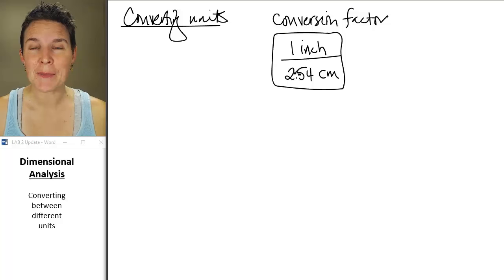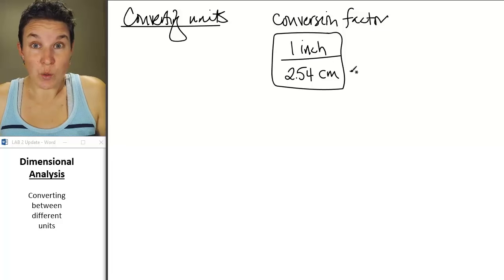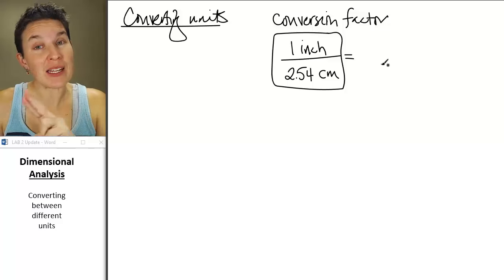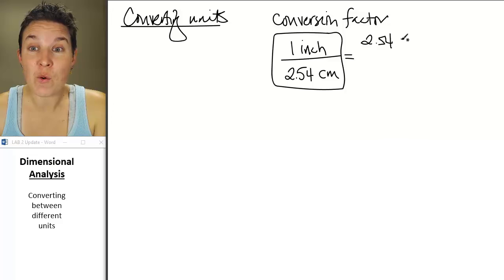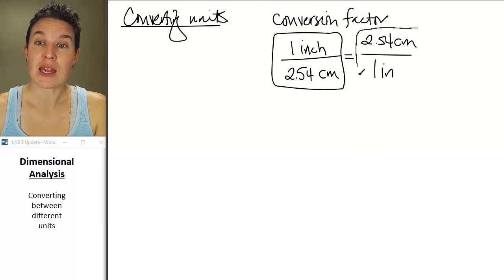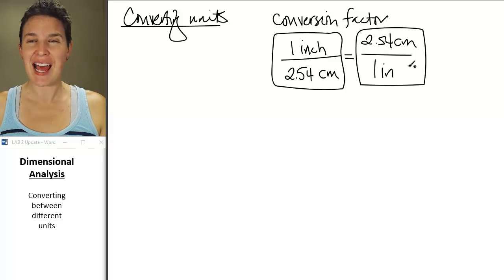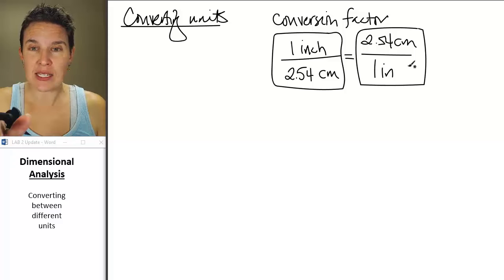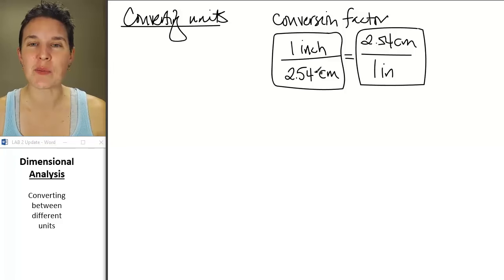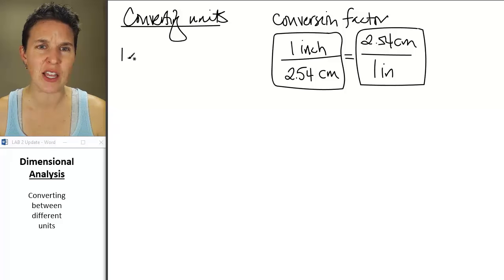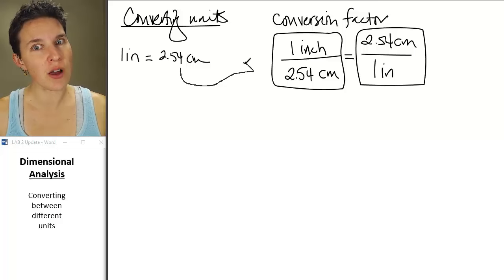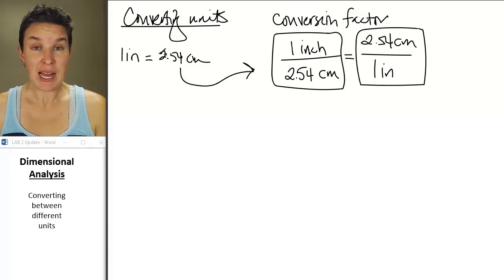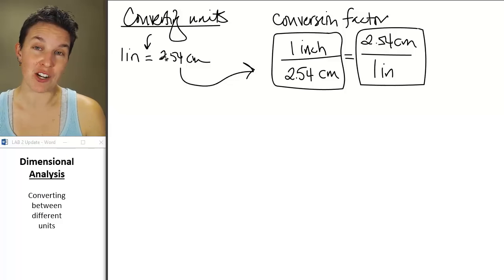Because a conversion factor just equals one, it can be written in two ways. You can write it as one inch over 2.54 centimeters, or as 2.54 centimeters over one inch. The one you want to use depends on your strategy. Most of the time conversion factors are given to you in equation form — like 'one inch equals 2.54 centimeters' — and you can turn any equal statement into a conversion factor.